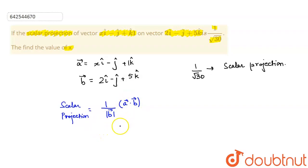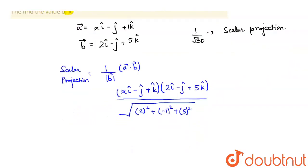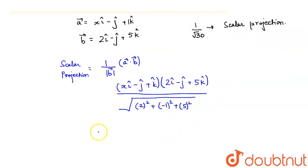I get a dot b vector: x i cap minus j cap plus k cap into 2 i cap minus j cap plus 5 k cap, divided by the magnitude of b. So if I solve this, what do I get? I get 2x plus 1 plus 5.